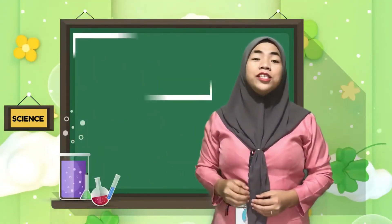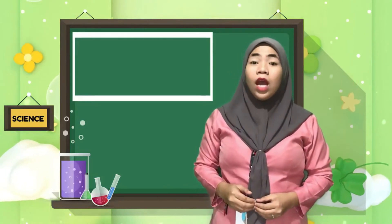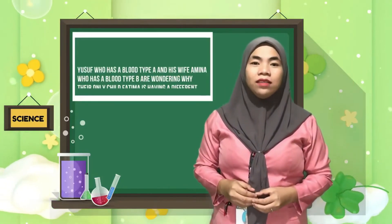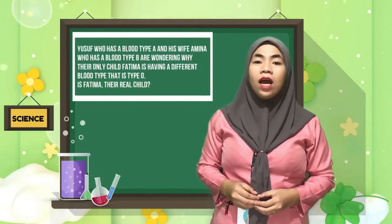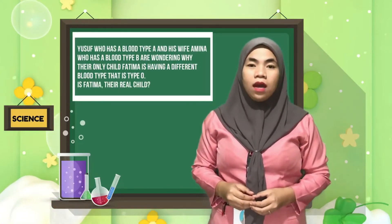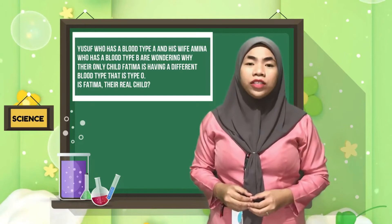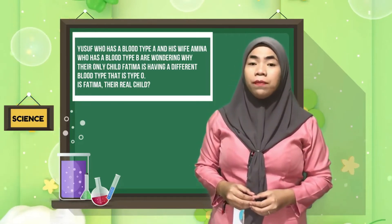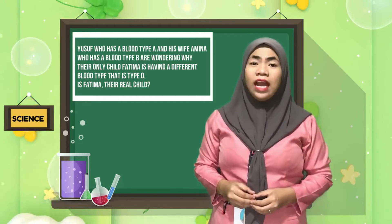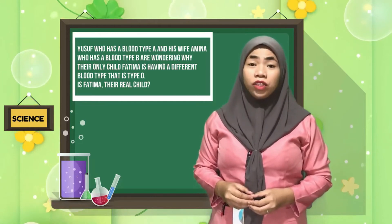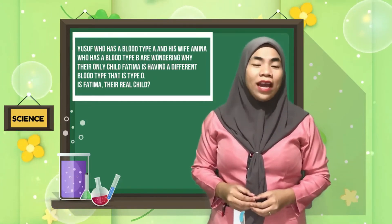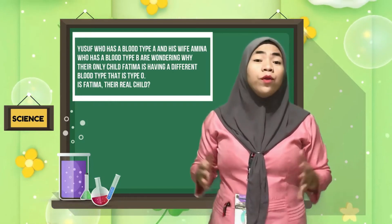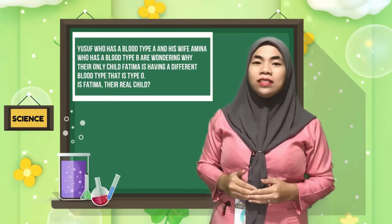The following symbols represent the alleles: Capital I superscript A causes the formation of immunoglobulin A on the surface of the red blood cell. Capital I superscript B causes the formation of immunoglobulin B on the surface of the red blood cell. Capital I, small i, does not form any immunoglobulin A or B. Although there are three different alleles for the ABO blood group system, only two are present in an individual at a time. For example, Yusuf has blood type A and his wife Amina has blood type B — they are wondering why their child Fatima has blood type O. The answer is yes, Fatima is their real child, and we will find out why as we move through this lesson.